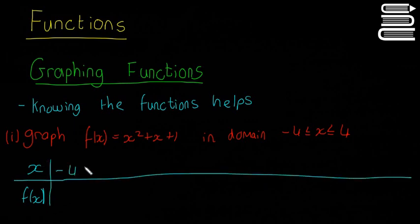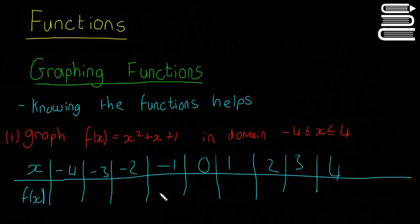So then you're going to do -4, -3, -2, -1, 0, 1, 2, 3, and 4. All the numbers in the domain as they call it.